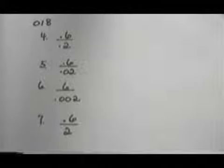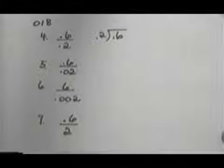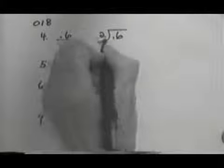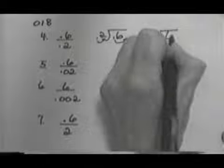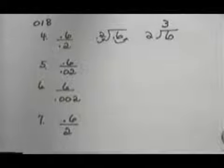In order to do 6 tenths divided by 2 tenths, we've got to move the decimal point in each one place to make the divisor a whole number. So we're really just dividing 2 into 6. So in that case, we're going to get 3. The first one just came out to be a plain old 3.